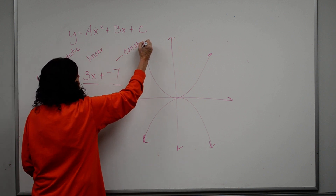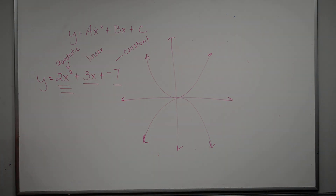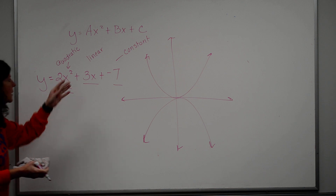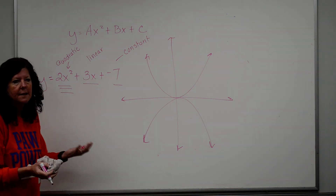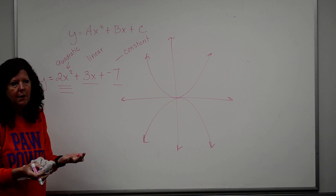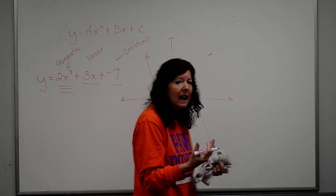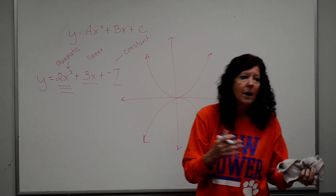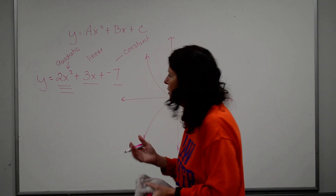Understand, when I say this is the quadratic term, the term is actually 2x squared. Don't just pull the 2 off of it — it's that whole term, 2x squared. The linear is 3x and the constant is negative 7. So if they gave you an equation and asked you to identify the quadratic, linear, and constant term, you would have to get it into this standard form so that you can see it.